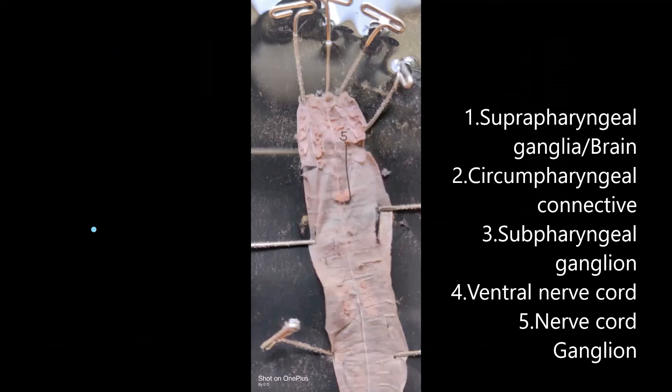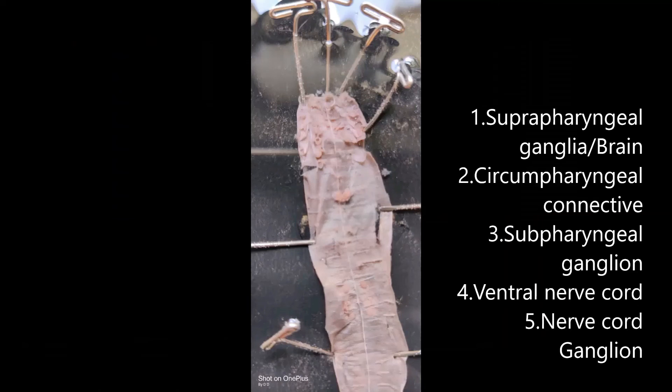It surrounds the pharynx. The parts of the nervous system of the earthworm that can be seen are: the suprapharyngeal ganglia on top of the pharynx, the circumpharyngeal connectives running on the sides of the pharynx, the subpharyngeal ganglion present at the base of the pharynx, and the ventral nerve cord running on the ventral side with nerve cord ganglia present in every segment. The ganglia give out nerves in each segment.